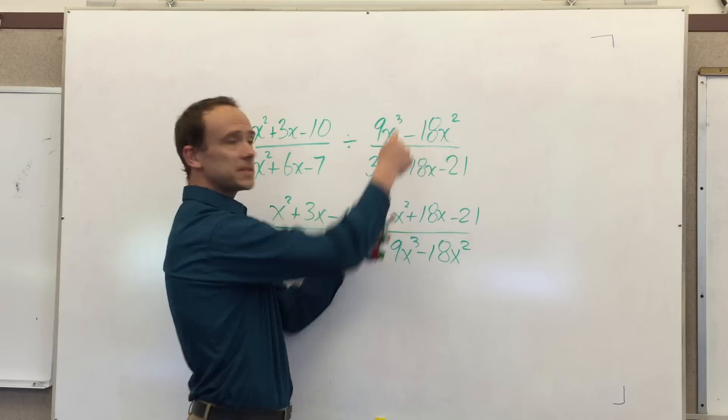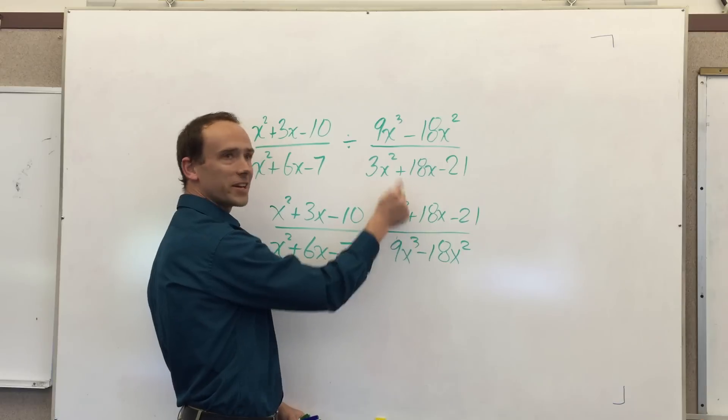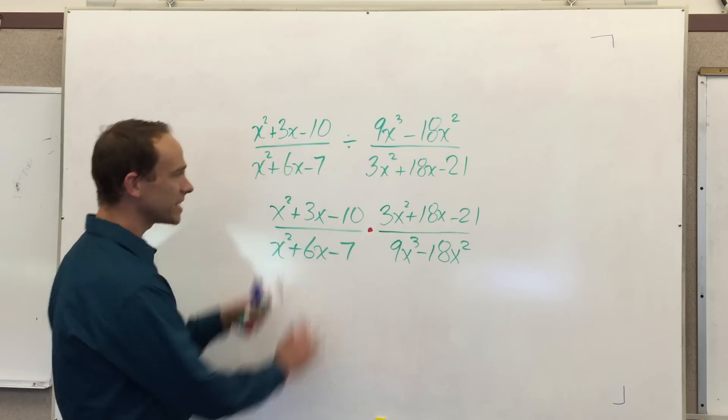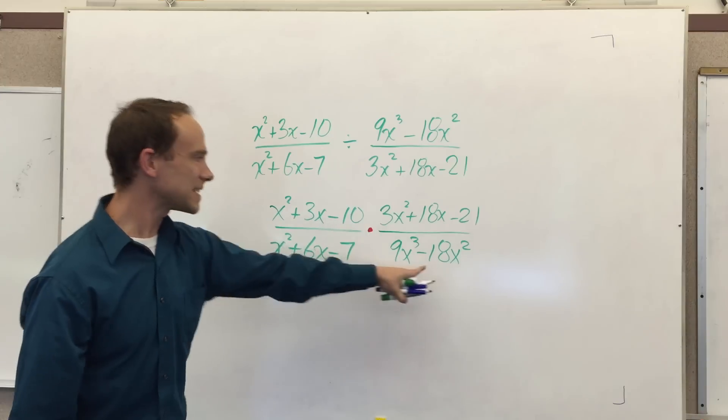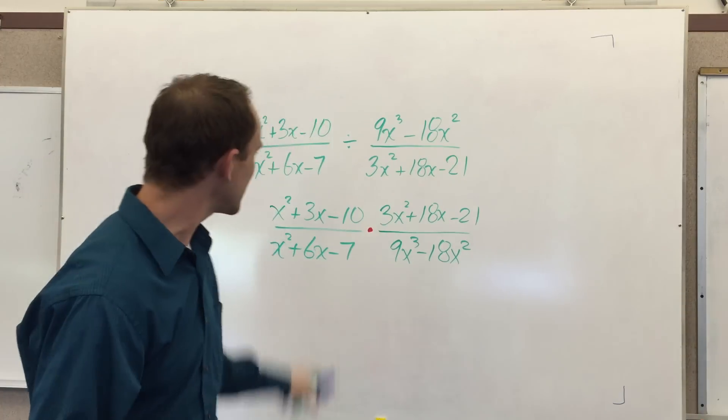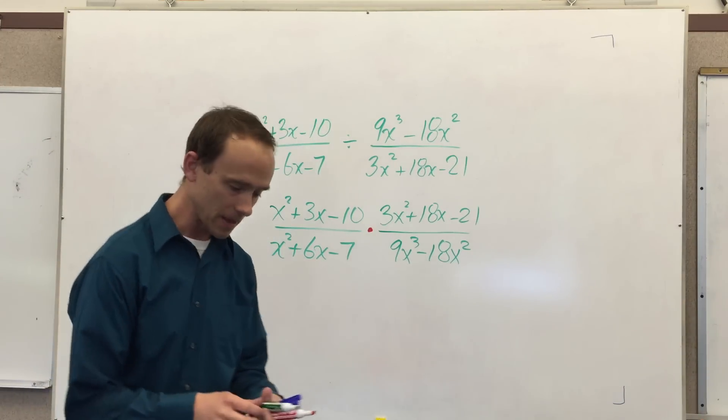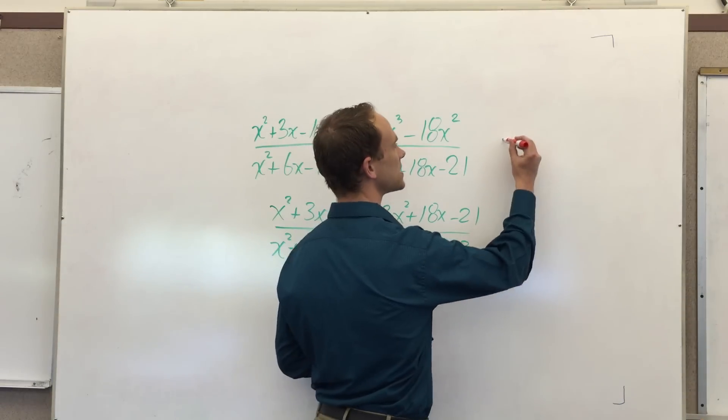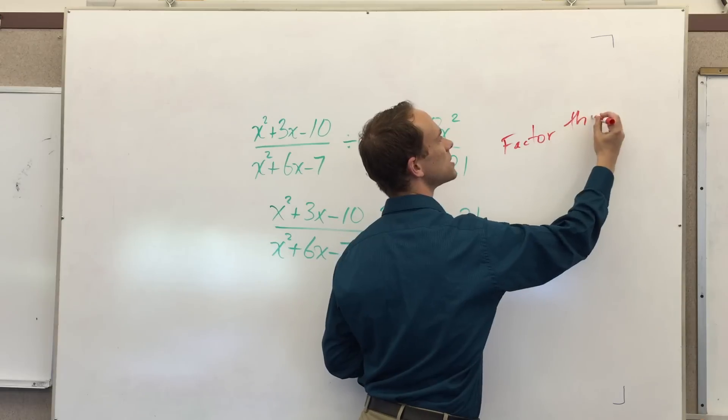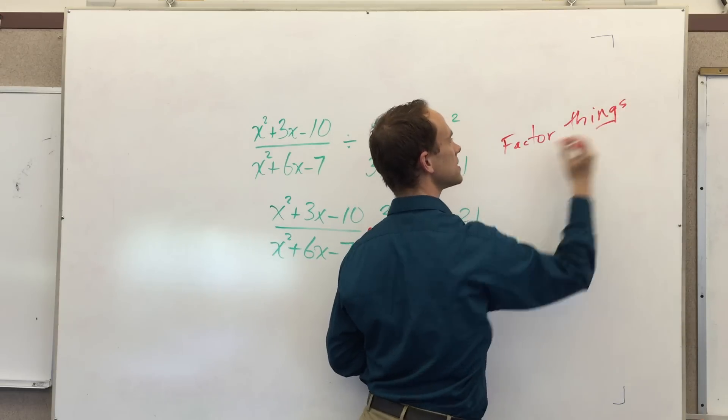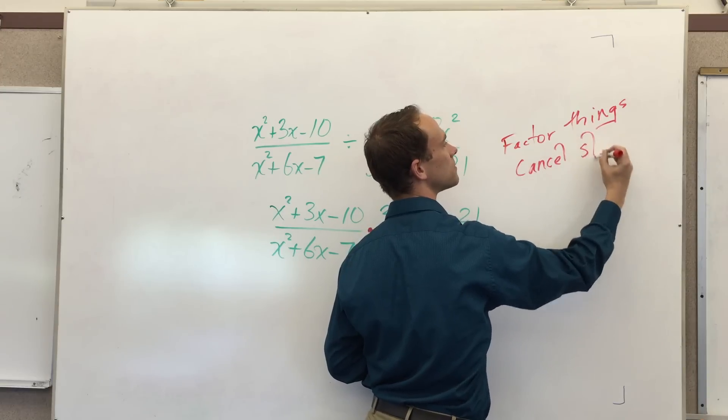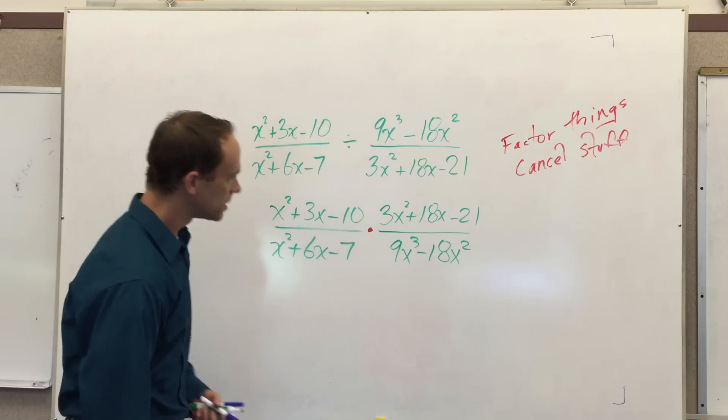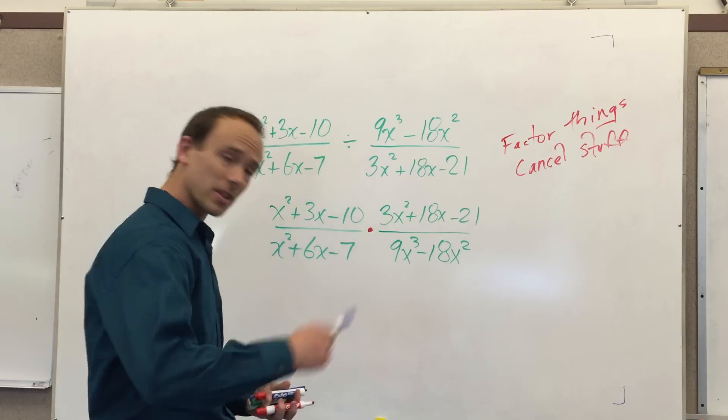So look at what I did - I flipped it. My denominator is now my numerator and my numerator is now my denominator. Division became multiplication and that looks a little crazy but these are trinomials and that's a binomial and we got to be in the mindset that when we see those we're gonna factor them. So I'm gonna factor one, two, three, four things. Let's get on this ride together.